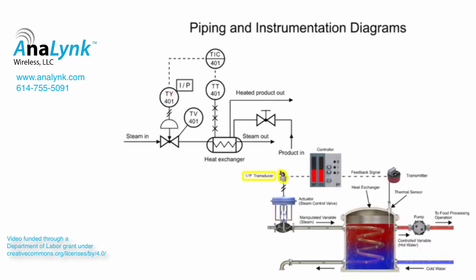The transducer converts an electronic signal to a pressure signal and is indicated by the square containing the letters I/P. The line with diagonal marks designates a pneumatic connection.